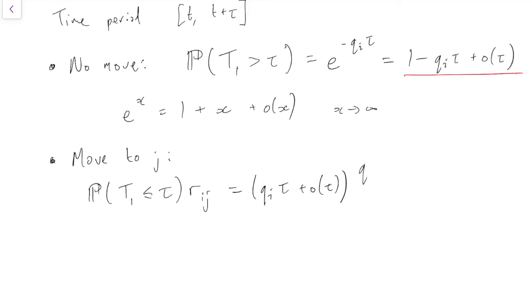And then the probability that we move to j is rij, which you'll remember from the definition is qij/qi. So this comes out as qij*tau plus little o(tau).